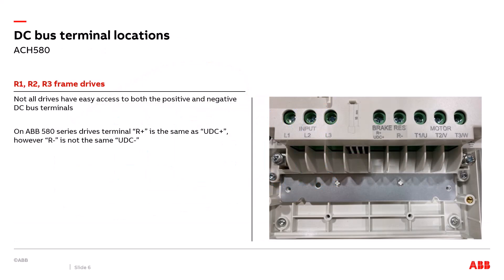So now where do we physically land our voltage probes to measure the DC bus on the drive? Well that can depend on the actual brand and model of the VFD. On the ABB ACH 580 series drives, the smaller horsepower include the R1, R2, and R3 frame drives. Access to both the positive and negative DC bus are not right next to each other. Access to the positive DC bus as shown on the image on the right red oval is the point UDC plus. The terminal to the right of it labeled R minus is not the same as the negative DC bus. That's part of the brake chopper circuit. We'll cover in the next slide where to access the negative DC bus terminal.